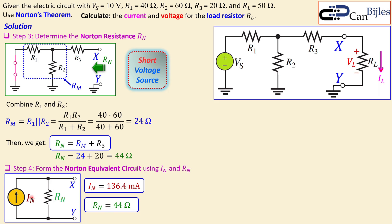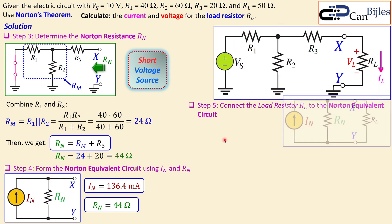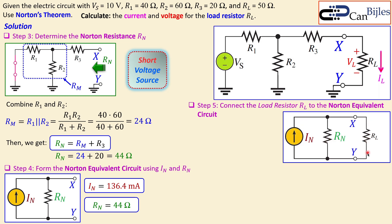With In = 136.4 milliamps and Rn = 44 ohms, we move to step five and connect the load resistance RL between nodes X and Y. This equivalent circuit is much simpler than the original, and the VL and IL calculated from it are exactly the same as in the original circuit.